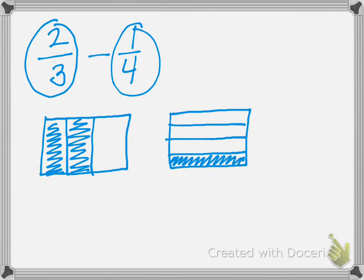Our next step is to come back to the first rectangle and draw the same horizontal lines that we drew in the second rectangle — we're going to break it into fourths. And then we're going to go to the second drawing, the 1 fourth, and break it into thirds vertically. So we're giving each rectangle the other rectangle's lines, and now they should have the same number of sections.